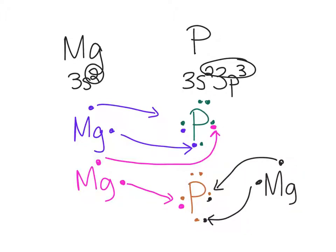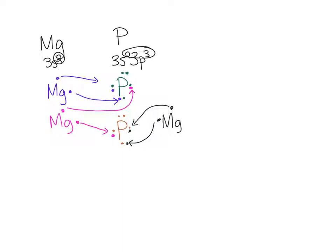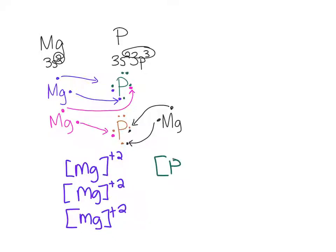Okay? So, now that you've figured out what the transfer is, you can go ahead and represent them all. So, we have magnesium lost two, so he's plus two, so it's a cation. We have another magnesium who lost two, and one more magnesium that lost two. And we have a phosphorus, who is all full, with a minus three charge, because he accepted three electrons. And another phosphorus, who has eight valence electrons, and an overall minus three.